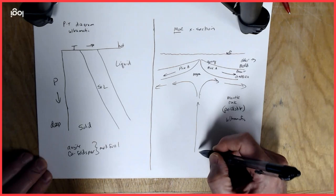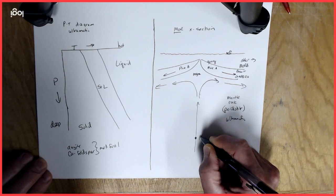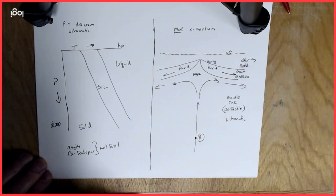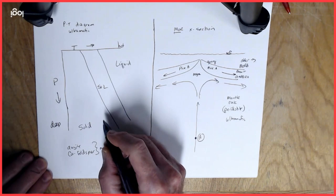So back to our diagram on the right, we've got upward convection of solid rock here. So somewhere down in here, we'll just call this at point A, we've got rock that is solid. It is ultramafic in composition. It's solid, but it's under very high pressure because it's deep, and it's going to be really, really hot.